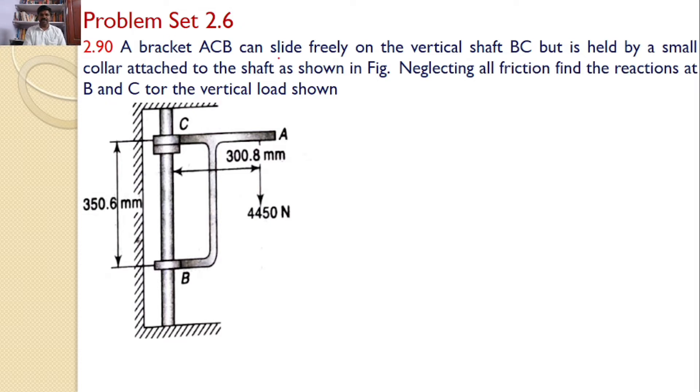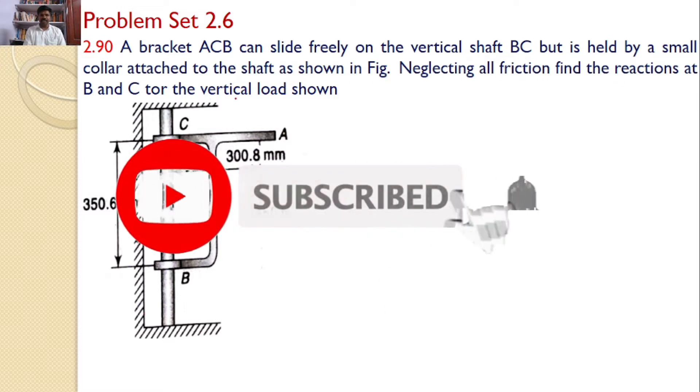A bracket ACB can slide freely on the vertical shaft BC but is held by a small collar attached to the shaft as shown in the figure. Neglecting all friction, find the reactions at B and C for the vertical load as shown.